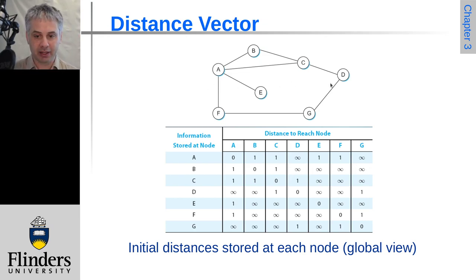For C, that can get to A, B and D directly. So A, B and D have a cost of one. Cost to itself is zero. The cost to everything else is infinite. We can repeat this process all the way through.